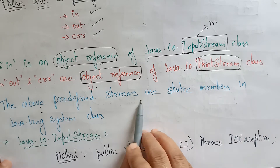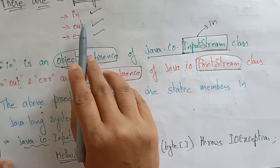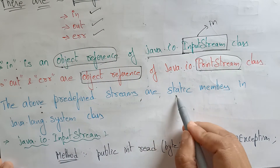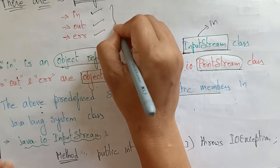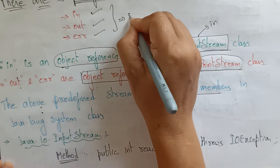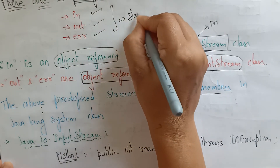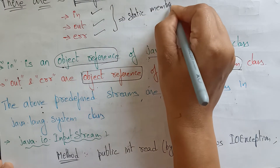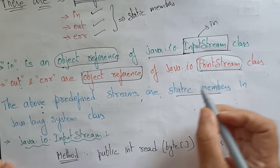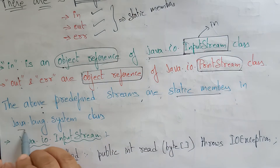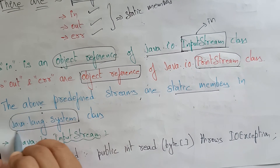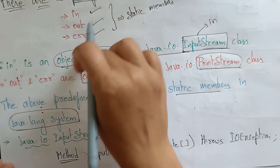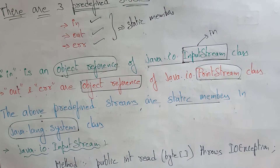The above predefined streams — in, out, and error — are static members. These are all called static members, which are present in the java.lang.System class. So all of these — in, out, error — are present in System class.